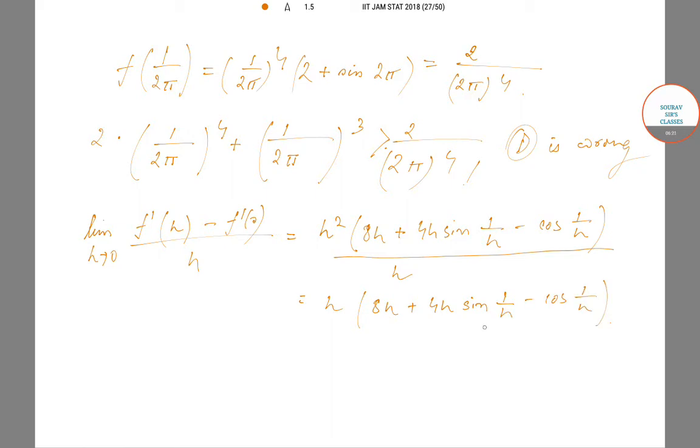Since sin(1/h) oscillates and goes to 0, 8h goes to 0, cos(1/h) oscillates, and this entire thing equals 0. F'(h) is dominated by h outside which goes to 0. Therefore F''(0) equals 0, and 0 is not a minima.